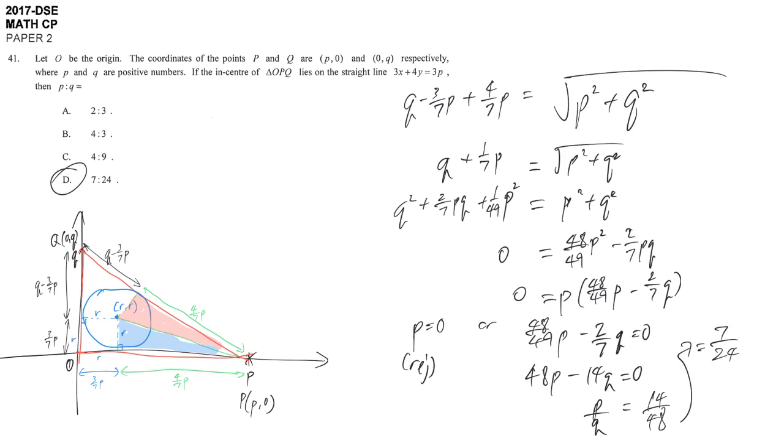In this question, you need a clear understanding of the incenter and what it means to lie on a straight line. You need to find how the center relates to the coordinates, and use the tangent from exterior point property to connect P and Q using the distance formula. This is a really difficult question that tests multiple concepts together.